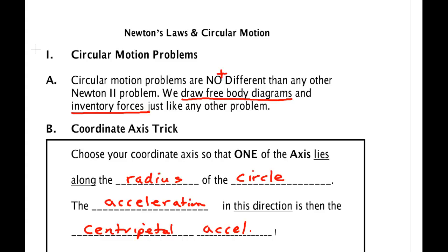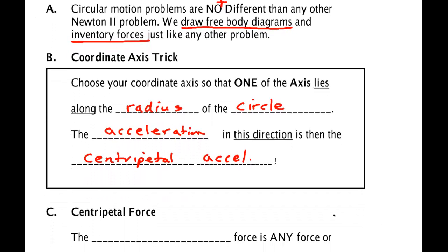That's the main trick to working these problems. Now sometimes you will have a problem that involves an inclined plane and also involves a circle — maybe it's a banked racetrack. When you have a conflict about whether to place the axis along the incline or along the radius of the circle, circles always trump. The difficulties of dealing with the trig functions of the circle are usually more difficult than those of the inclined plane, so you're best to make the axis along the radius and handle the circle first.